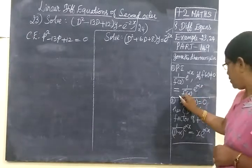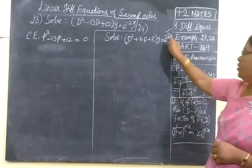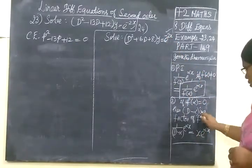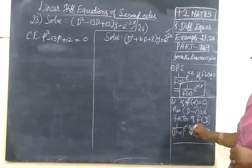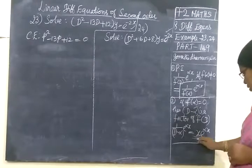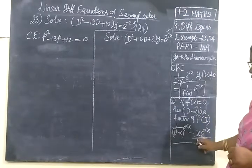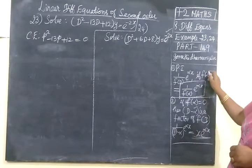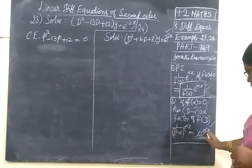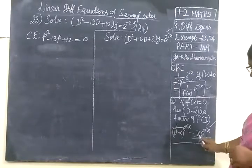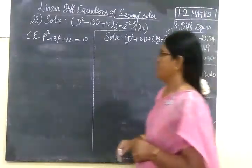If not equal to 0, the answer is 1 by f of alpha, e power alpha x, where alpha equals minus 2 for this sum. If f of alpha equals 0 and d minus alpha is a factor, then you write x e power alpha x as the particular integral. If we do the sum it is easier for you.